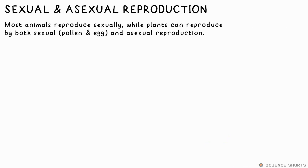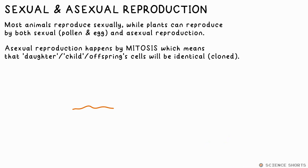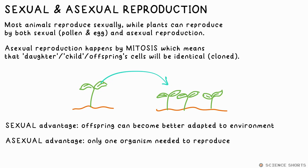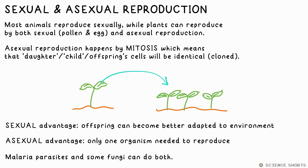Plants can also reproduce asexually. As this doesn't involve gametes, the daughter cells will be genetically identical, so a clone of the parent is made by mitosis. An advantage of sexual reproduction is that variation occurs, which can result in organisms becoming better suited to their environment, so they're more likely to survive. However, an advantage of asexual reproduction is that only one parent is needed — if a plant is on its lonesome, it can still reproduce for the species to survive. Examples of other organisms that can do both are the parasite that causes malaria and some fungi.